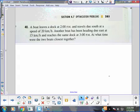Alright, so here's an optimization problem, section 4.7, number 40. This is the one that you wouldn't have answers for. A boat leaves a dock at 2 p.m. and travels due south at a speed of 20 kilometers per hour. Another boat has been heading due east at 15 kilometers per hour and reaches the same dock at 3 an hour later. At what time were the two boats closest?